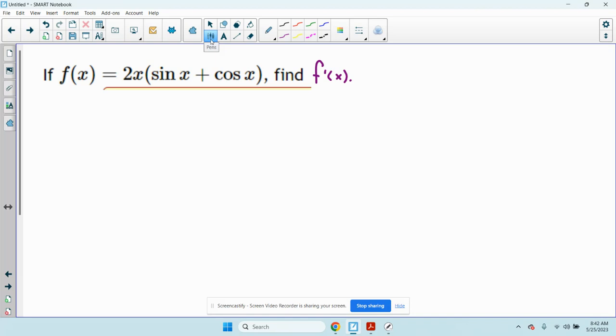Okay, so this says if f of x equals 2x times the quantity sine x plus cosine x, find f prime.